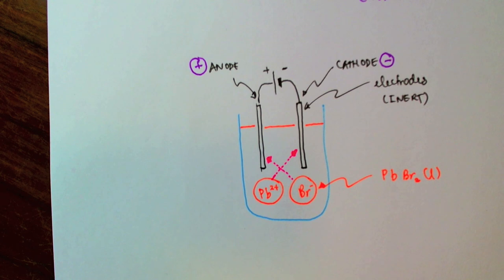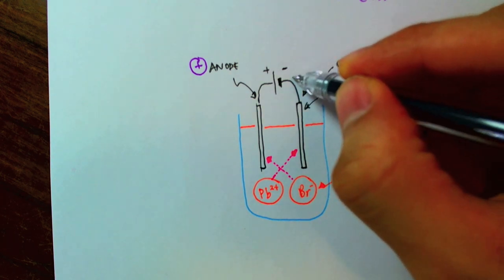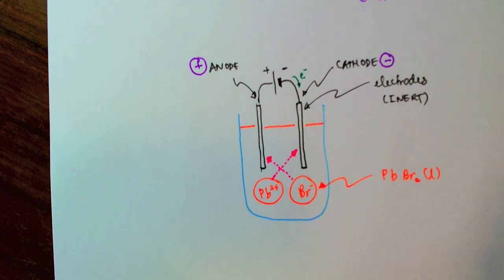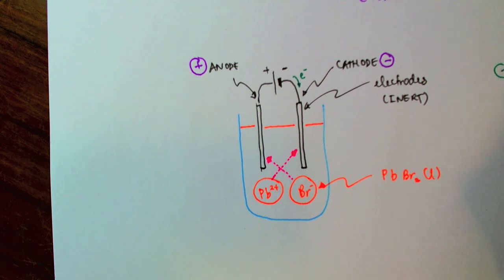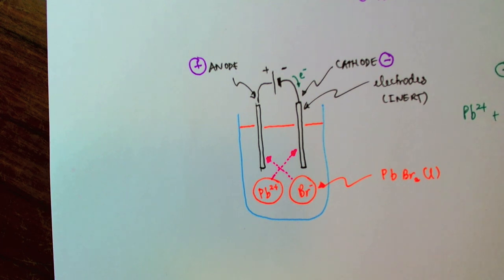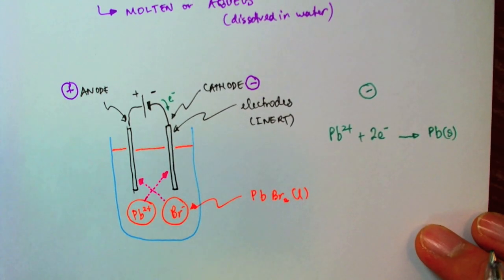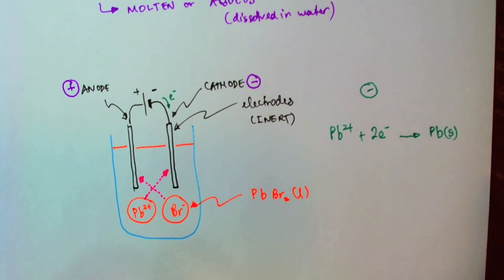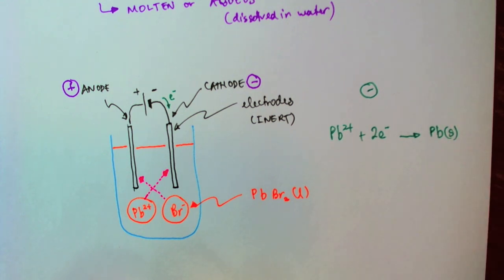So, the cell will supply electrons to the cathode. So, what happens is that at the cathode, the lead ions will receive two electrons and form solid lead. So, these electrons are supplied by the cell, and they come in to neutralize the two positive charges on the lead ion, forming solid lead.